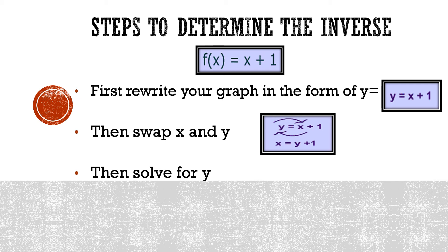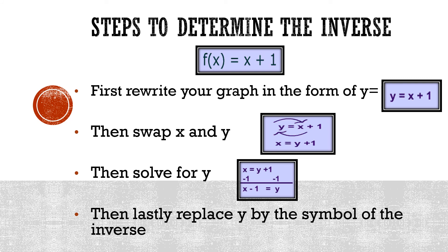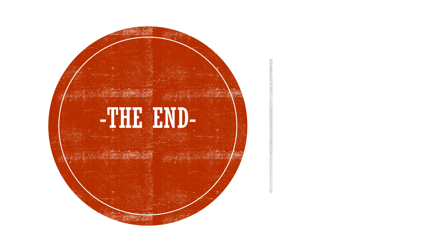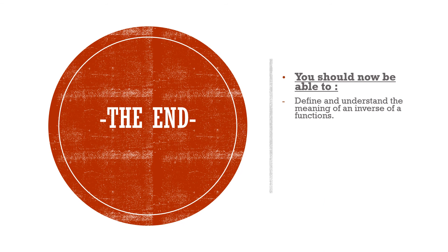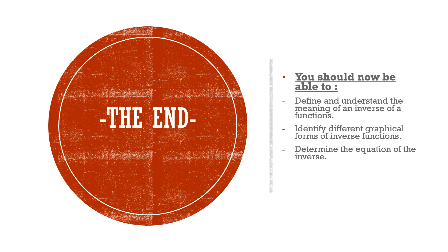Then we solve for y. To solve for y, we subtract one from both sides, leaving us with y equals x minus one. The last step is to replace y with the inverse notation. Since our original function was f of x equals x plus one, we write f inverse of x equals x minus one. In this lesson you should now be able to define the inverse of a function, identify different graphical forms of inverse functions, and determine the equation of the inverse function.